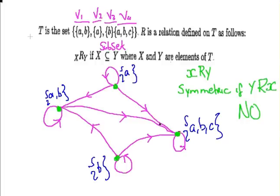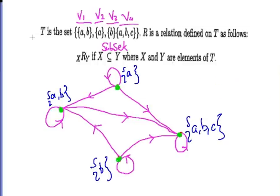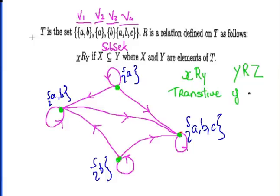Lastly, we are asked to determine if it is transitive. Transitive works on the following basis: we have xRy and yRz for vertices X, Y, and Z. It is transitive if xRz.